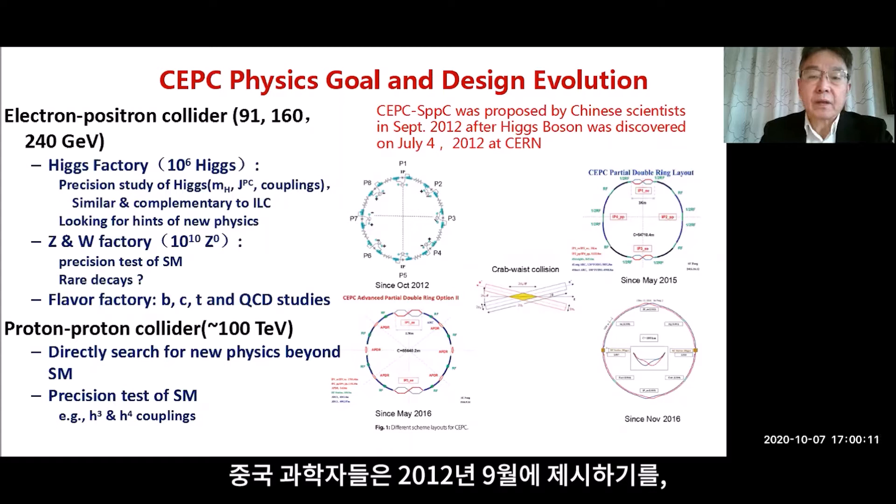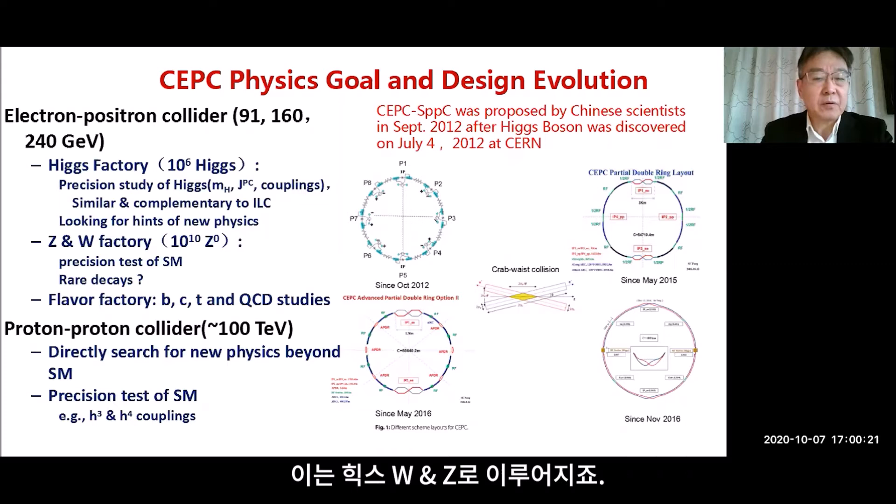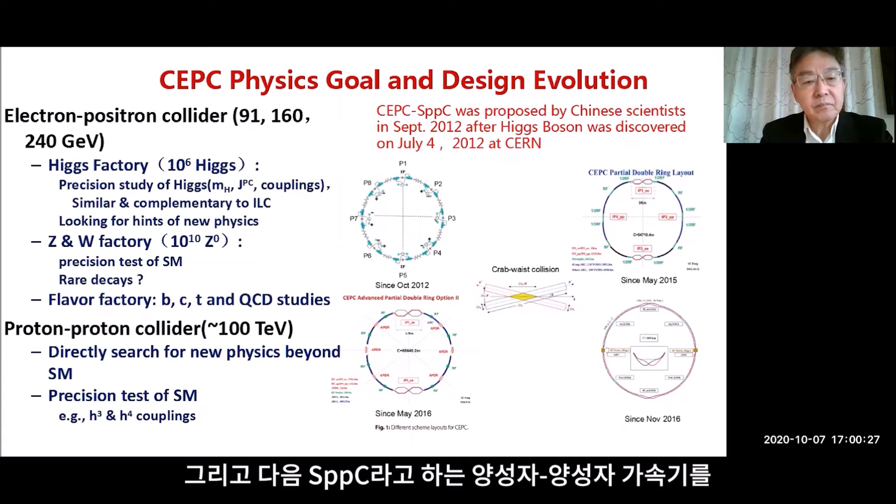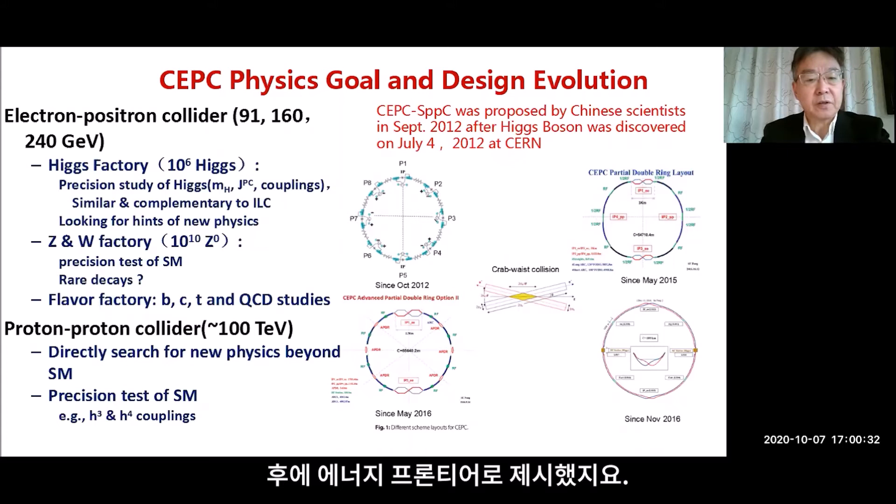So Chinese scientists proposed in September 2012 an electron-positron collider as a Higgs factory, which can work at the Higgs, W, and Z energies, followed by a proton-proton collider, the so-called SPPC, for the energy frontier later.